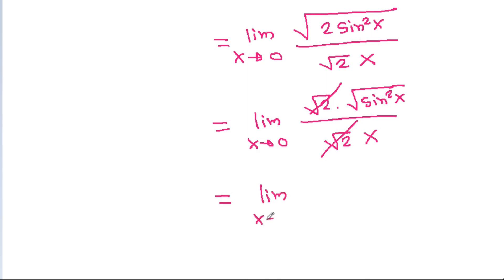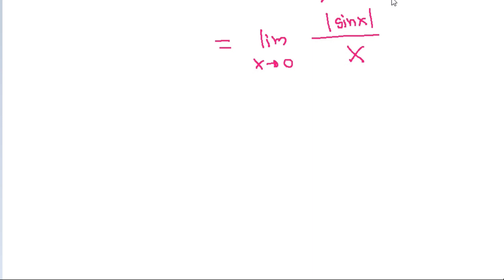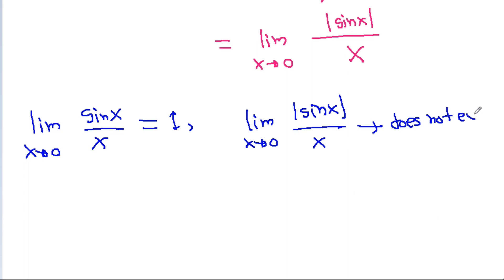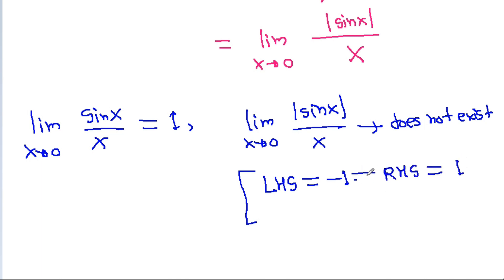This reduces to limit x tends to 0 of |sin x| divided by x. As x tends to 0, the left-hand limit equals −1 and the right-hand limit equals 1, and these two are not equal.